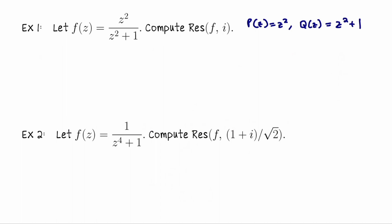The roots of Q are plus minus i, each is simple. So let's compute the residue of f at, say, i. Using the result that we just proved, we can say that the residue of f at i, I'm going to say that that's P of z divided by the derivative of Q of z evaluated at z equals i, which is actually going to simplify to z over 2 evaluated at z equals i, which is i over 2.